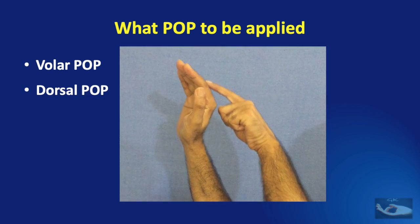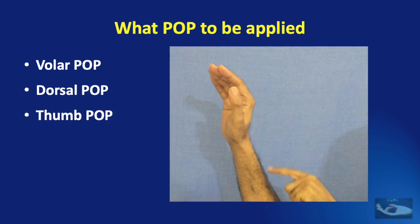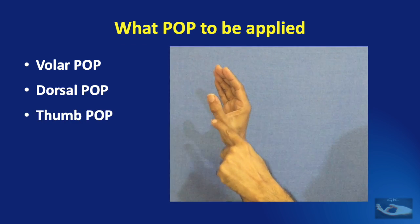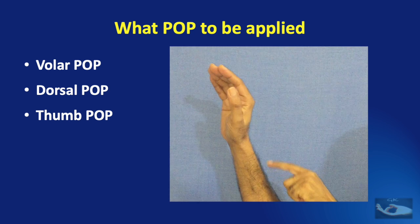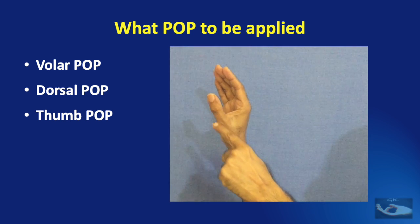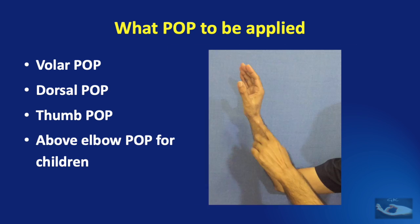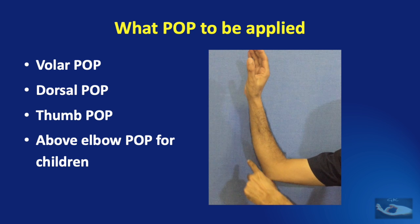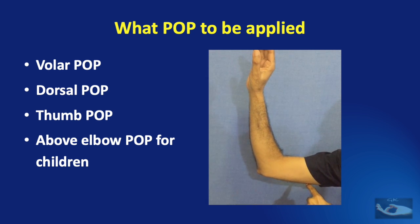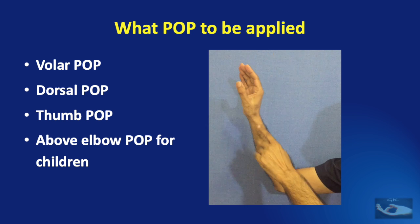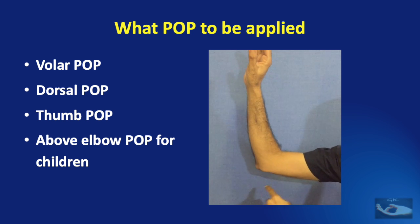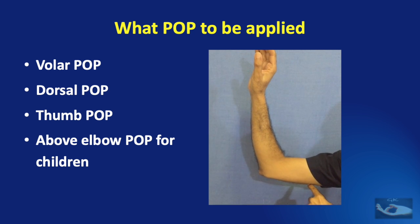A dorsal POP is applied on the dorsal aspect of the hand and a thumb POP is applied just for the thumb and this POP also extends up to the middle of the forearm. In children it is ideal to apply an above elbow POP since children would very easily remove a below elbow POP by making vigorous movements of the hand.